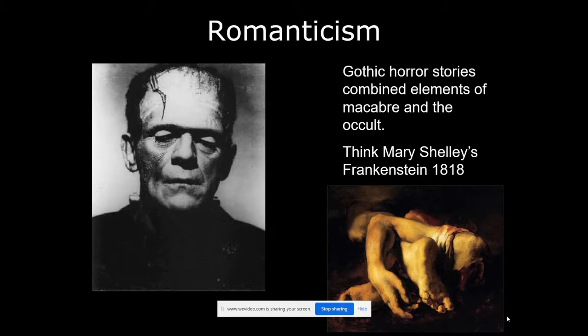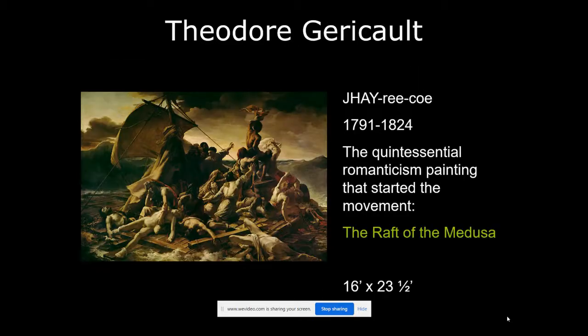That's the time period we're talking about — the 1800s. The first painting we're going to look at is by a guy named Géricault. This painting is the quintessential Romanticism painting that started the whole movement: the Raft of the Medusa. It's really big — 16 by 23 feet — and it tells a true story.